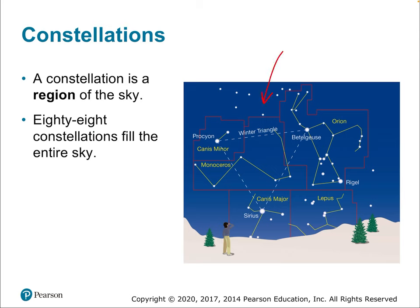The constellations fit together like blocky puzzle pieces and completely cover the sky. This allows astronomers to determine where objects are — we can give exact positions on the celestial sphere in terms of latitude and longitude, or in terms of altitude and direction in the local sky, or by stating what constellation an object is in — essentially what block of sky it's in. There are 88 official constellations covering the entire celestial sphere.